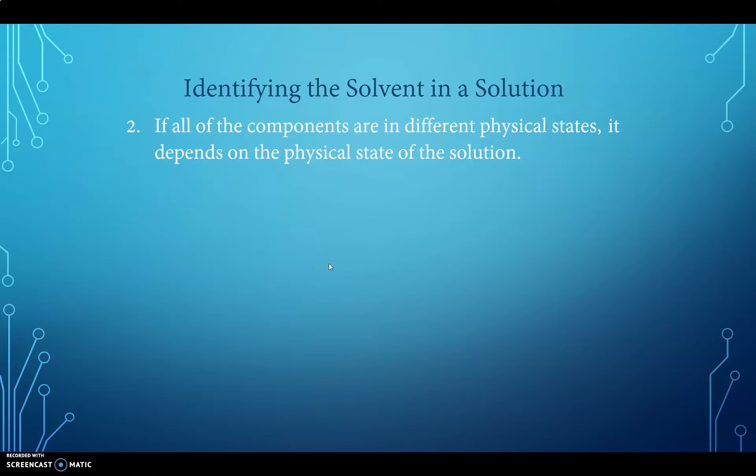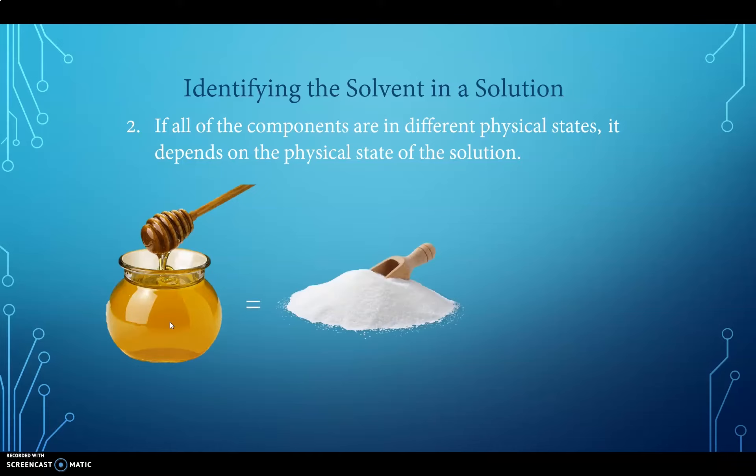The second thing we need to consider is what happens if the components are in different physical states. Say you have a solid and a liquid, or a liquid and a gas. In that case, we don't go by the amount. Instead, we look at the physical state of the solution. Honey, for example, is a solution that consists mainly of sugar and water. In honey, you have about 85% solid sugar and only 15% liquid water. So you might be thinking, I guess sugar must be the solvent, but that's not the case. Because there are two different physical states, we look at the physical state of the final solution. Honey is a liquid, and water is a liquid, and therefore water would have to be the solvent.